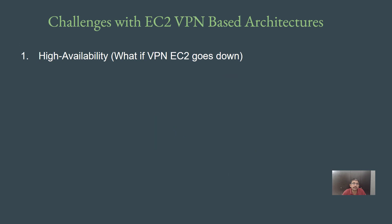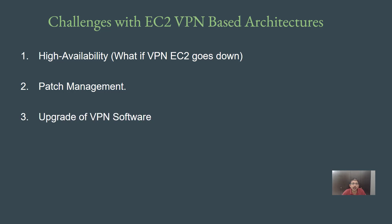Whenever you are configuring VPN for a production environment, you have to take care of high availability as well. The second important area is patch management — it can be related to the VPN software or the underlying operating system. New vulnerabilities are released every week, so you have to check for and patch them regularly. The third primary challenge is the upgrade of VPN software. OpenVPN Access Server can have new major versions released, and the entire upgrade process also falls into your bucket.